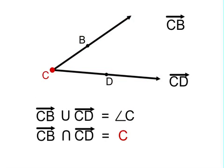If we take the intersection of the two rays, we just get a point — the vertex of the angle, the common point. Remember that the definition of an angle is two rays with a common endpoint. So the intersection of the two rays is point C. The sentence reads: ray CB intersected with ray CD equals point C.